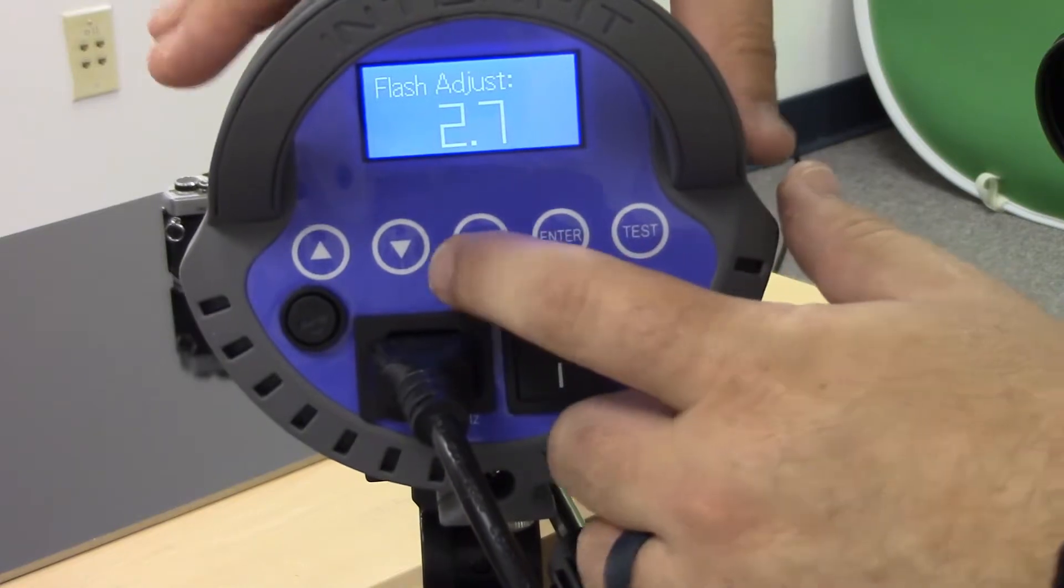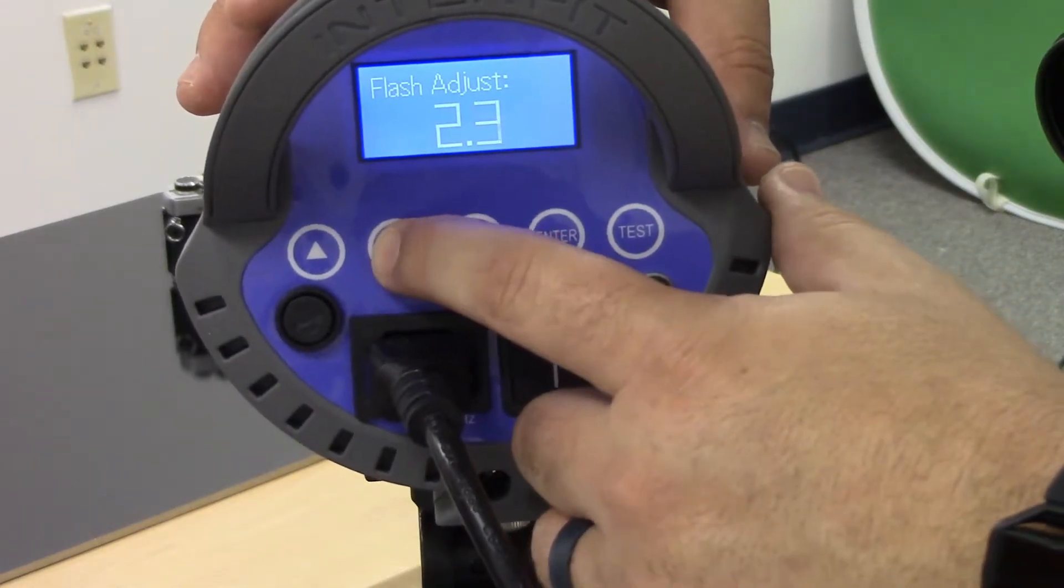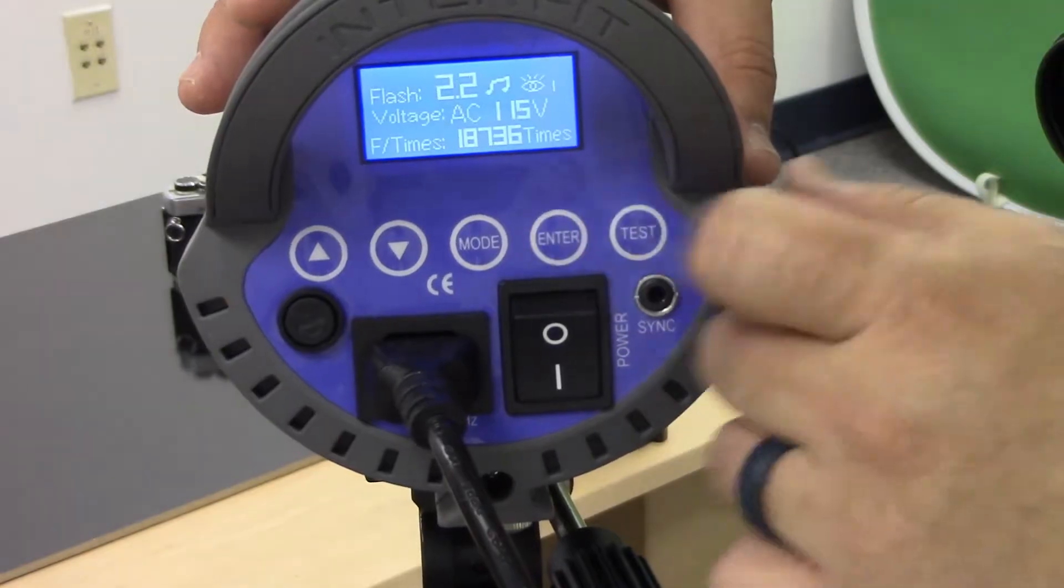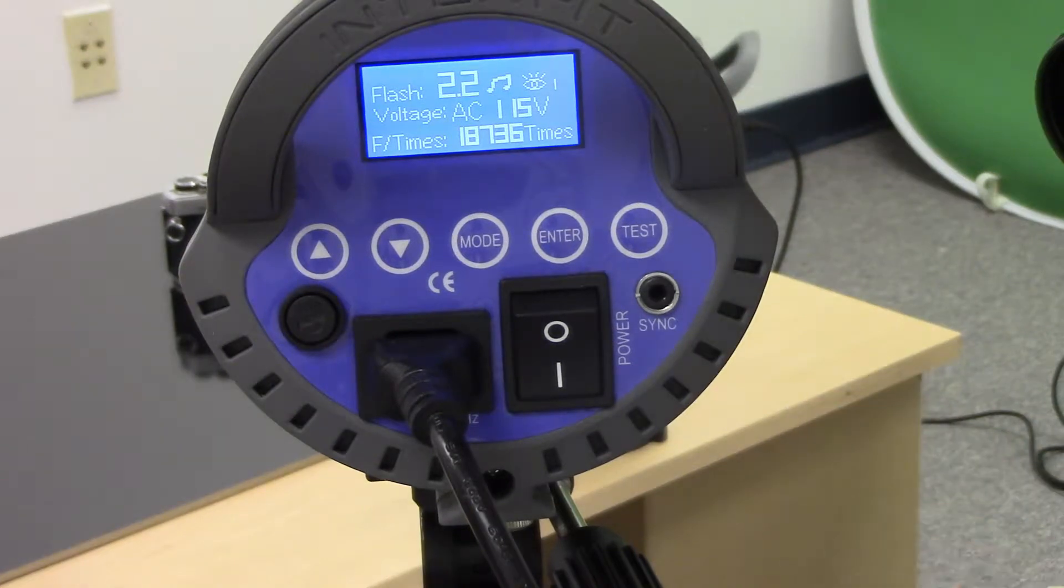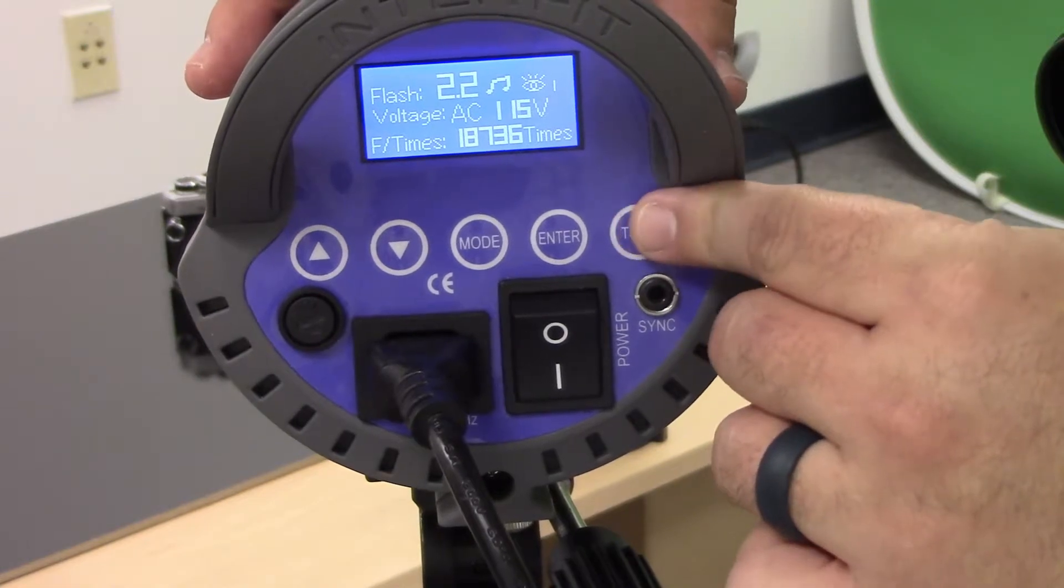When we change the power of the flash, we press this enter. What it will usually do is the flash will pop. If the flash doesn't pop, then you need to hit the test button.